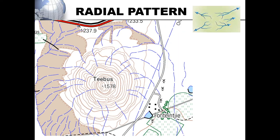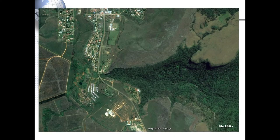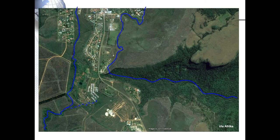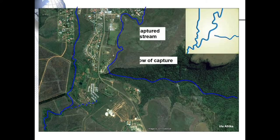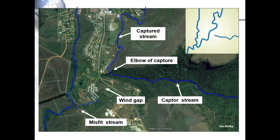Our radial pattern flows from a higher area downwards. In this satellite image, we can ask you the term river capture — where two rivers exist and one has been captured. We can ask you to identify the captured stream, where the elbow of capture occurred, indicate the captor stream, where the wind gap is, as well as which one will have a misfit stream.